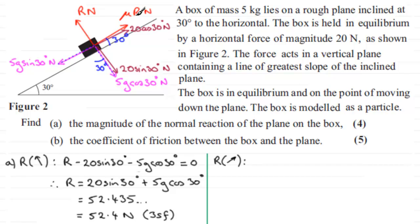So resolving up the plane, we've got mu r. We'll put that in, mu r. And then plus the 20 cos 30, plus 20 cos 30 degrees. And then we've got minus 5g sine 30, 5g sine 30. And this is all the forces that we need. These forces and these two forces here are perpendicular to the direction that we are resolving in, so they have no effect. So this is the resultant force acting on the box parallel to the plane. And that resultant force is equal to zero because it's in equilibrium.